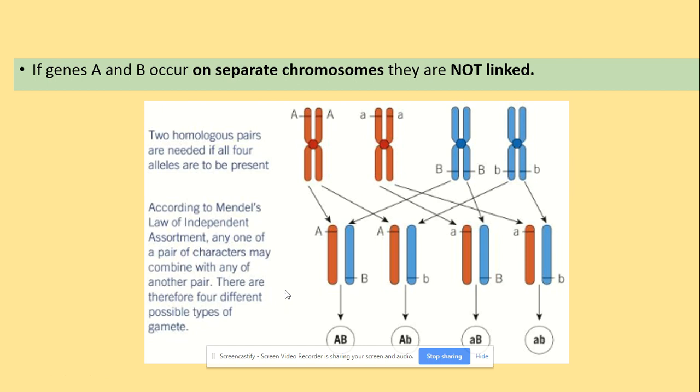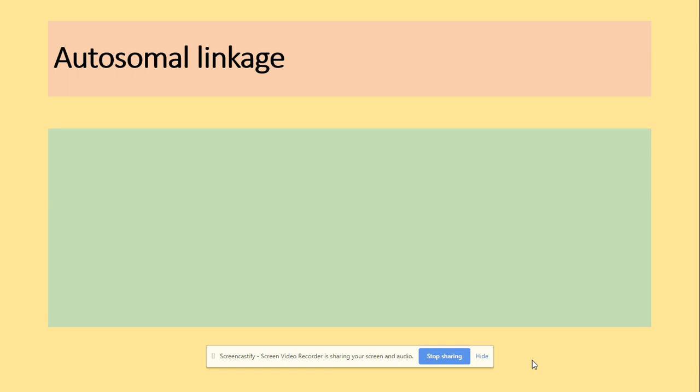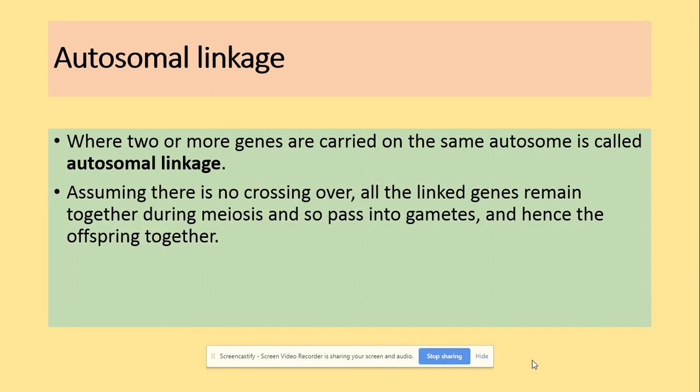But when it comes to autosomal linkage, genes A and B will come up on the same chromosome. As you can see, A and B are on the same chromosome, so in this situation we can get nothing else than capital A capital B in the first gamete and lowercase a and b in the second of our gametes. So there is less genetic variation in autosomal linkage. It works by the process that of course the genes are carried on the same autosome, so they are linked. And we also assume in this situation that there is no crossing over.